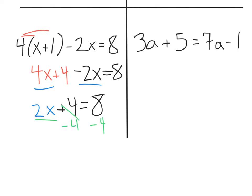That's going to leave me with 2x equals 8 minus 4, which is 4. And, I can divide by 2, divide by 2. That's going to leave me with x equals 4 divided by 2, which is 2.